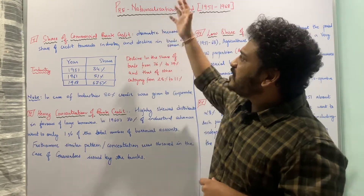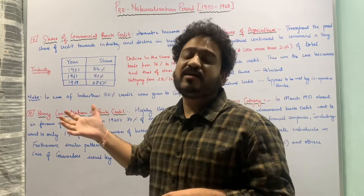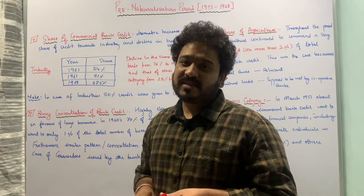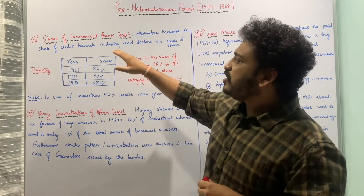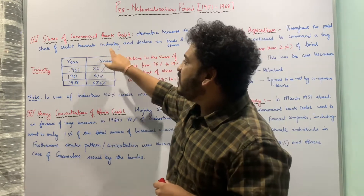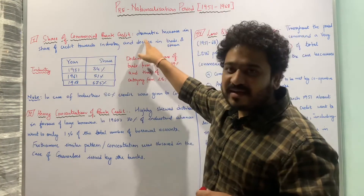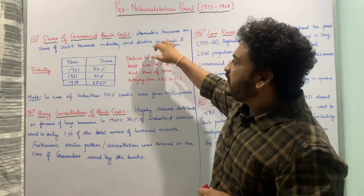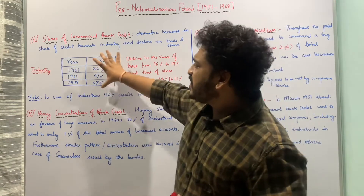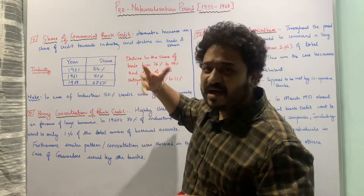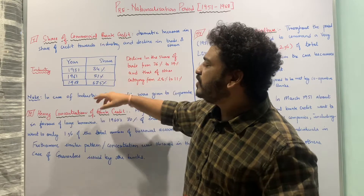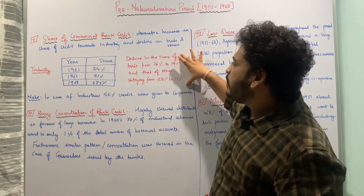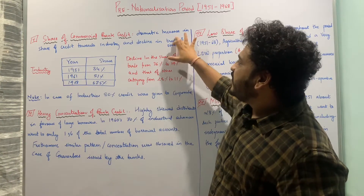We are going to analyze what the pre-nationalization period looks like in terms of commercial banking credit — specifically the share of commercial banking credit. This table gives you an idea of what the credit of commercial banks towards industry looked like, as well as the share of credit towards trade and other things.